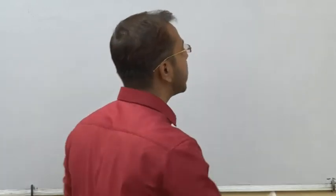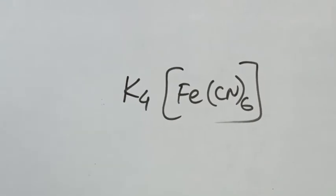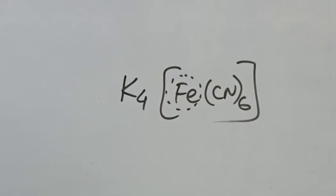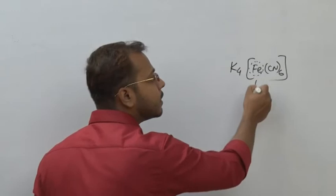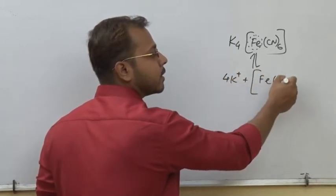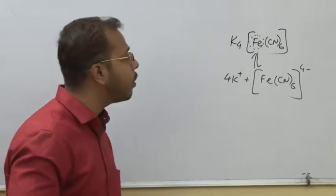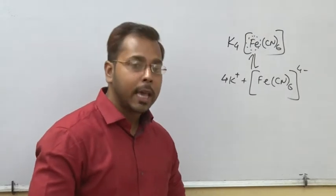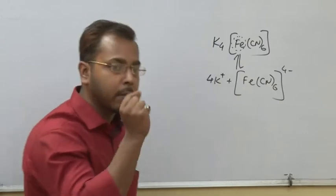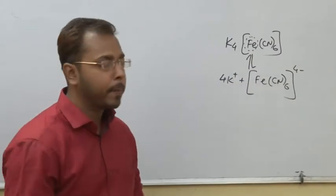Let us consider the example K4[Fe(CN)6], potassium ferrocyanate. Here iron is the central atom and it has two valencies: primary valency and secondary valency. The primary valency corresponds to the elements outside the coordination sphere — since potassium has 1+ charge and there are 4 potassium ions giving 4+, the complex anion [Fe(CN)6] has 4− charge, so the primary valency of iron is 4. The secondary valency, that is the coordination number, is 6 as it contains 6 cyanide ligands.